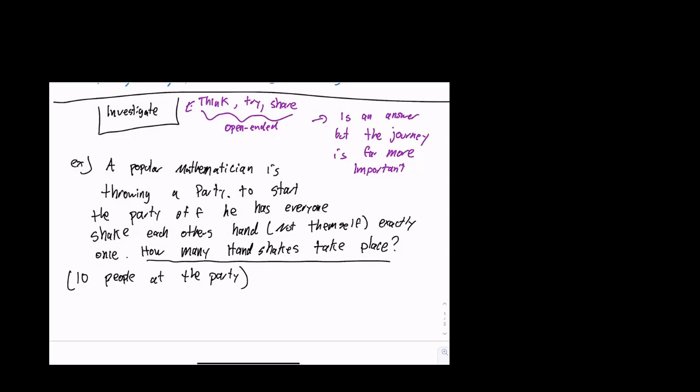Every, sorry, each person at the end will have shaken every person's hand one time. So, if I shake this person's hand, I will not shake their hand again. And I will make sure that I shake every other person. Now, I am one person. I am one of the 10.